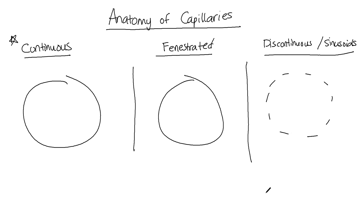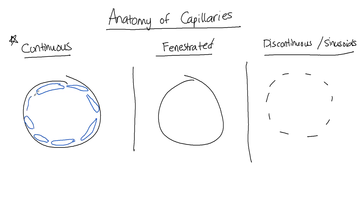Let's look at the continuous first. So we've got these endothelial cells — remember, they're one cell layer thick. Here's one endothelial cell, a small window or opening here, another endothelial cell, another endothelial cell. The opening in between these endothelial cells is quite narrow, and so it only allows for protein-free plasma to pass through.